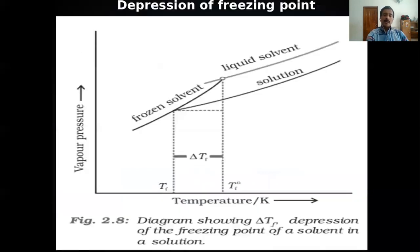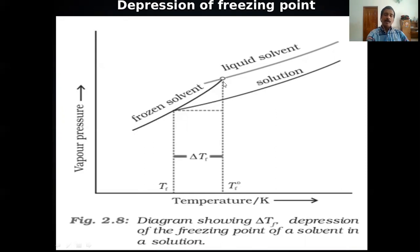Our next topic is depression in freezing point. Again we look at a vapor pressure–temperature curve, this time of the solid solvent. In the solid state, vapor pressure is very low. As temperature increases, vapor pressure increases. At a particular point, a change of phase takes place — the solid changes to liquid — and that temperature is the freezing point of the solvent.